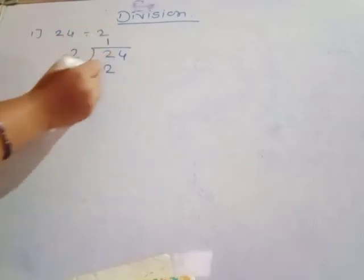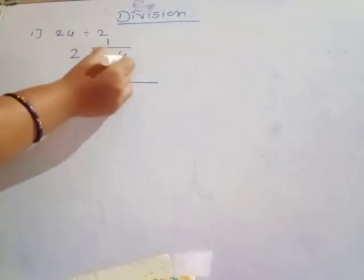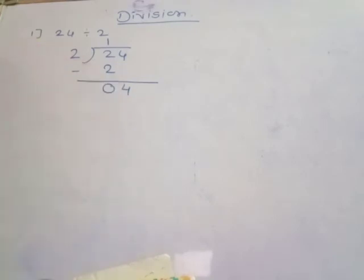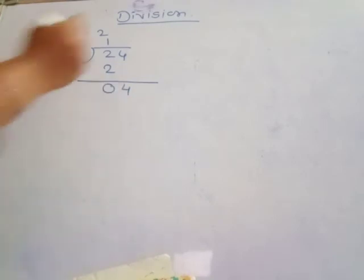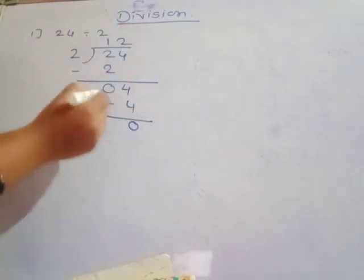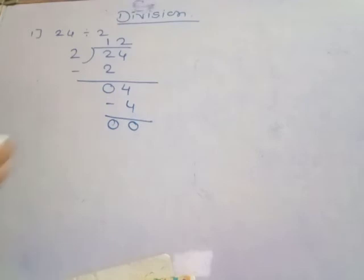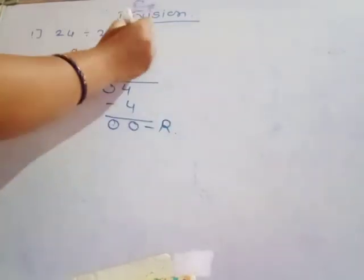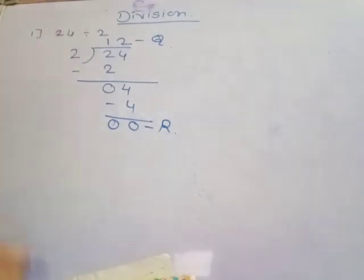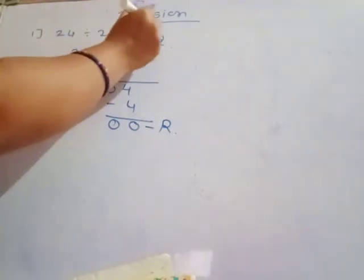In the two times table, two is there. Two ones are two. Then 2 minus 2 equals zero. Then take the unit's place number 4. Again, count the two times table up to 4: two twos are four. Four means the answer is 4. Four minus four is zero. The remainder is zero and the quotient is 12. So 24 divided by 2 is equal to 12.